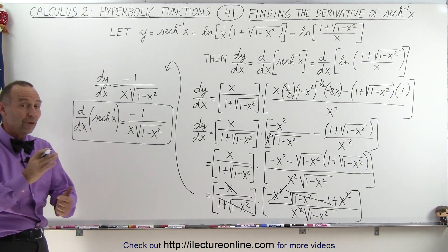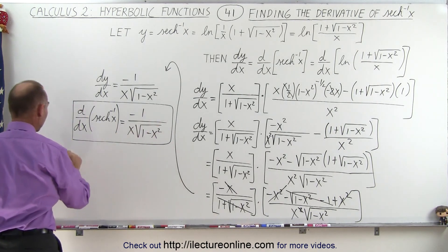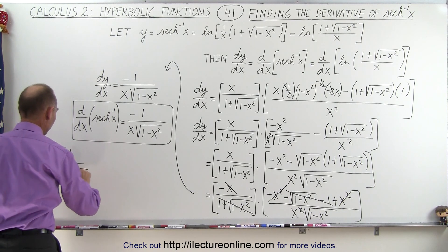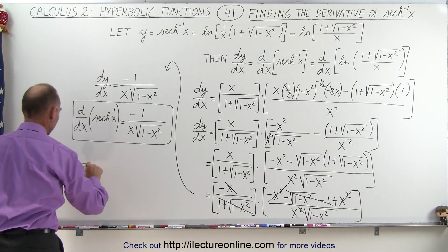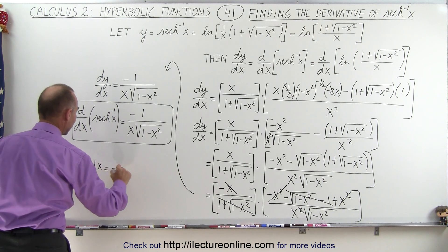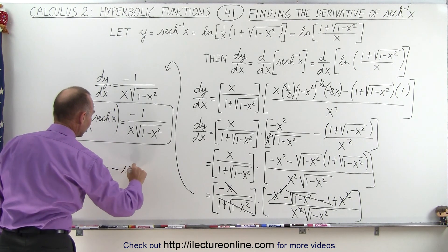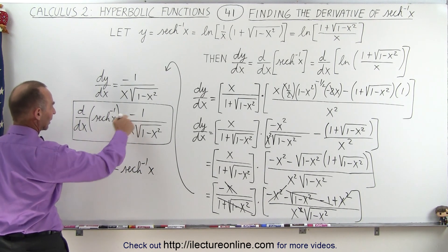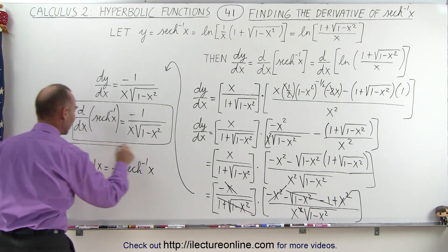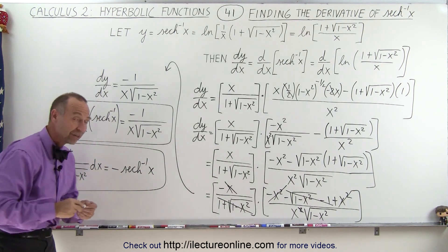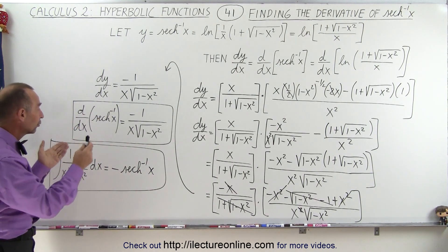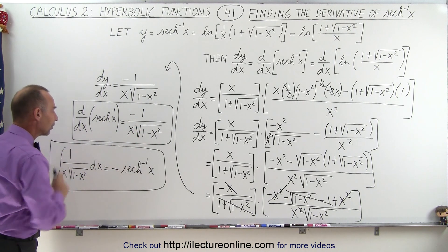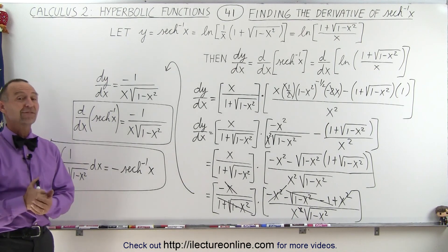We can reverse that result: the integral of 1 over x times the square root of 1 minus x squared dx equals the negative inverse hyperbolic secant of x. The negative comes from the negative in the derivative. Now that we have the derivative of the inverse hyperbolic secant of x, we can recognize that expression under an integral sign and know exactly what it integrates to. And that's how it's done.